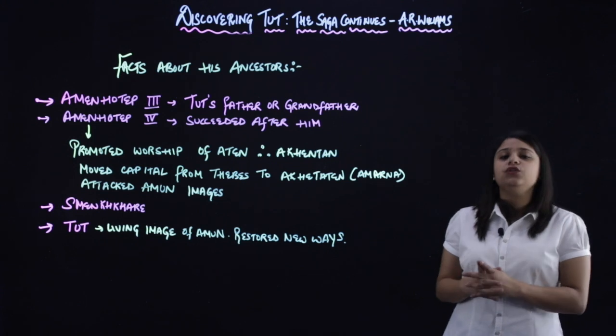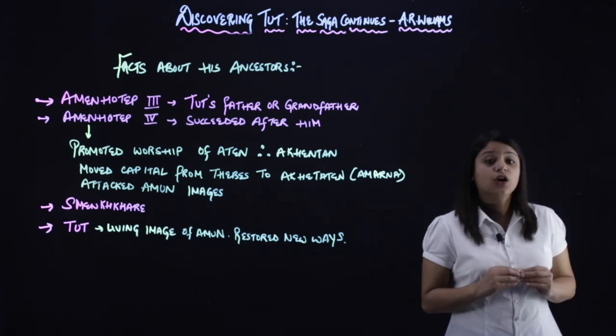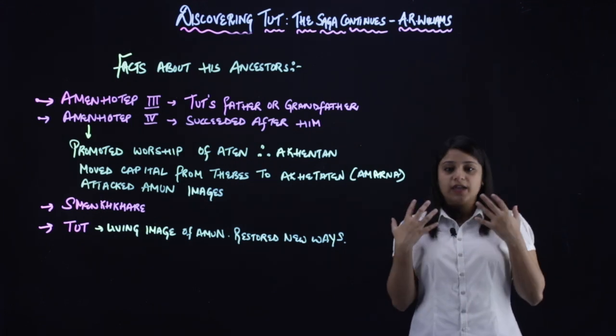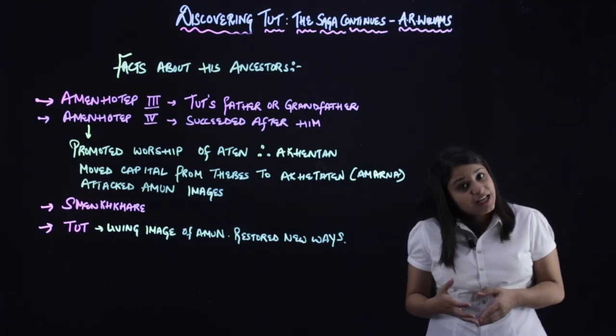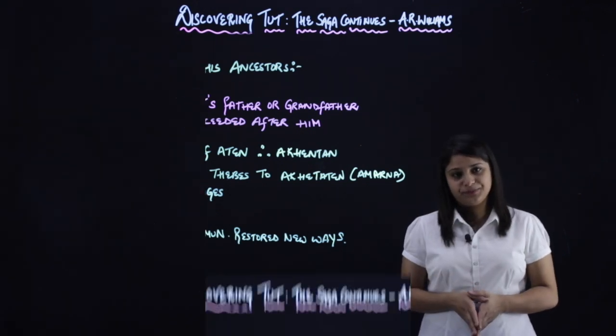The last thing that you need to know about King Tut is that he died 3,300 years ago, and he was a teen when he died. So after this everyone should understand that when he got the throne, he was quite young. So we have finally finished the chapter Discovering Tut, the saga continues.